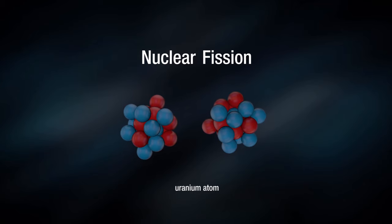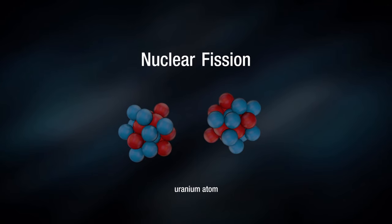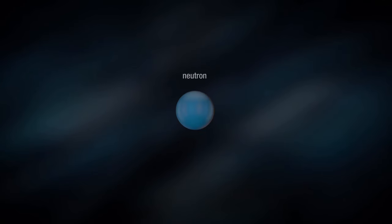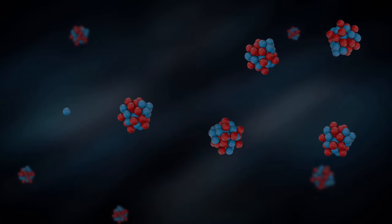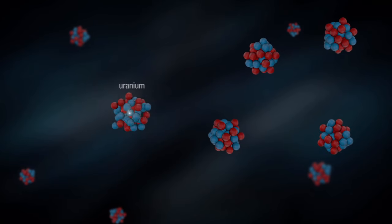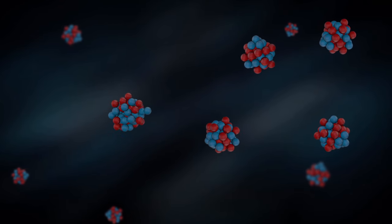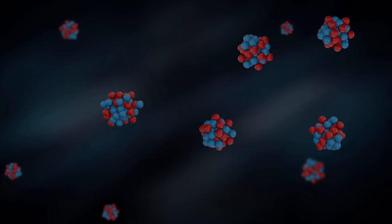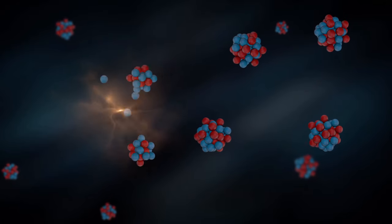This is done by firing neutrons at it. A neutron is a small atomic particle with no electrical charge. When the uranium atom is struck by the neutron, it absorbs it. But in doing so, it becomes very unstable and immediately splits apart.